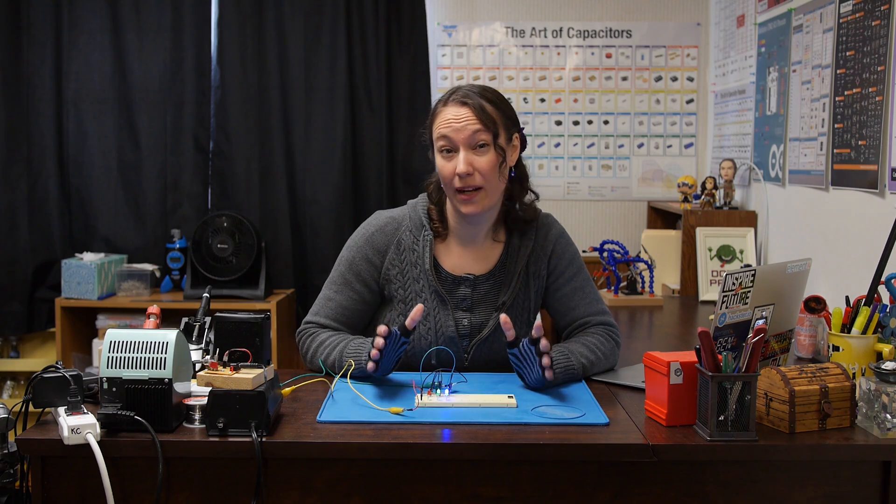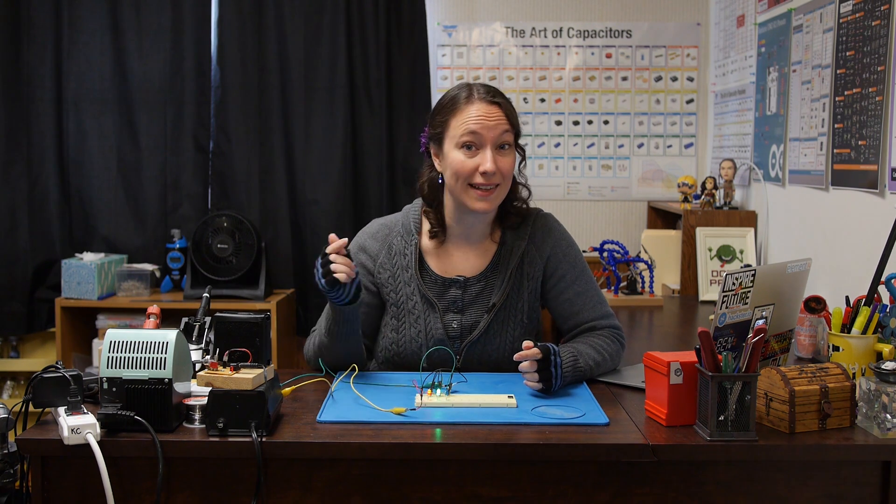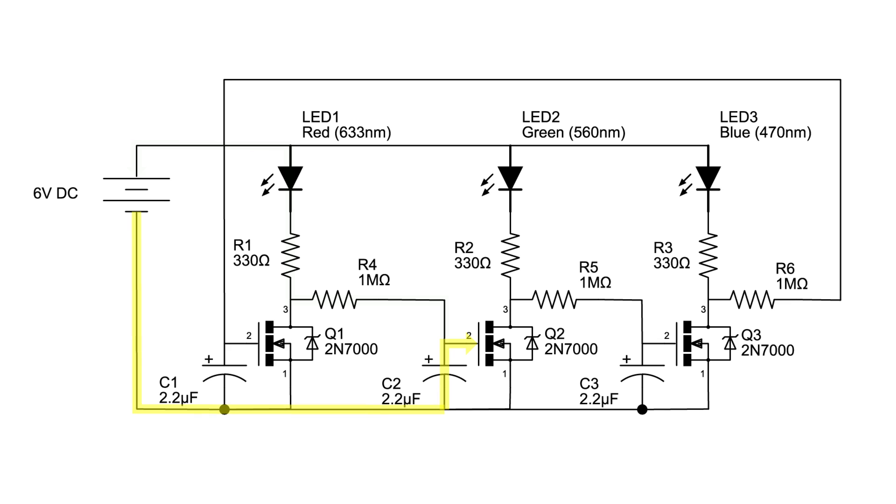I'm going to do my best to explain what's happening and why. We know that for our MOSFETs to turn on, we need a voltage at the gate. If we look at our circuit, that voltage has to come through the capacitor on the ground side. On the positive side, the gate and capacitor are connected to the power source through a 1 megaohm resistor, then a 330 ohm resistor, and lastly, the LED. This line is also connected to the drain and the previous MOSFET.